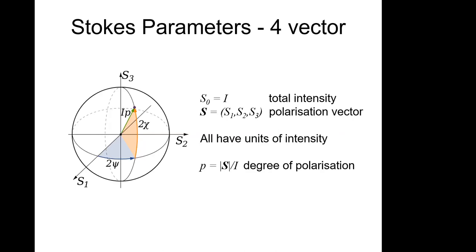The equator in this three-dimensional Poincaré space, in the S1-S2 plane, describes all linearly polarized states where the angle of the plane of polarization is given by psi. The poles describe circularly polarized states and anywhere else on the surface of this sphere is an elliptically polarized state.